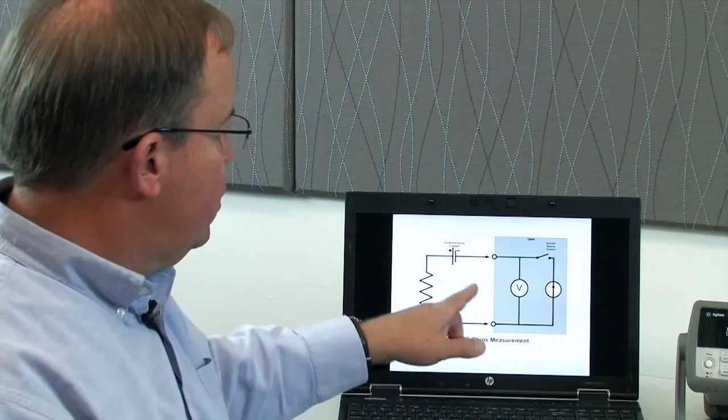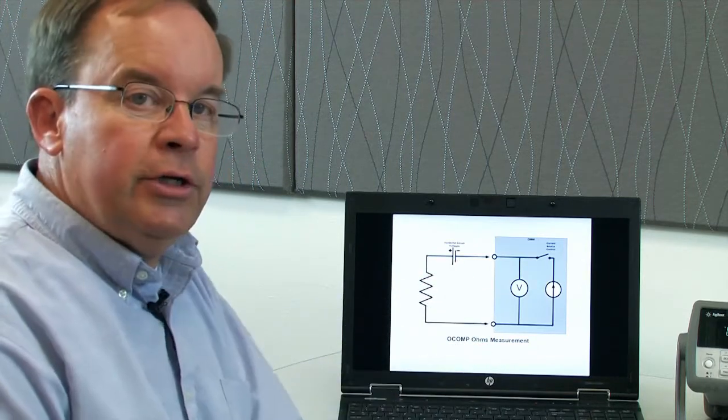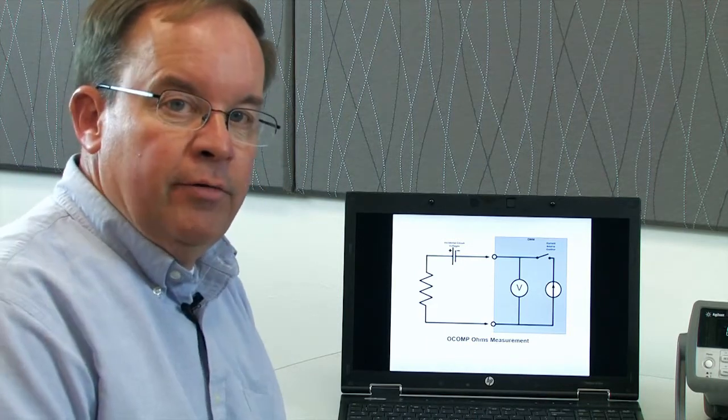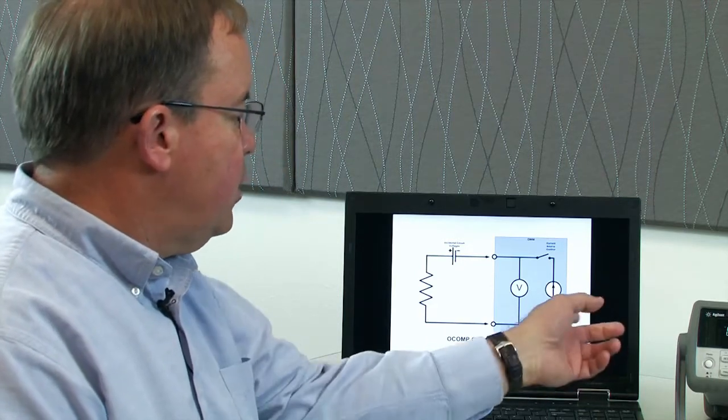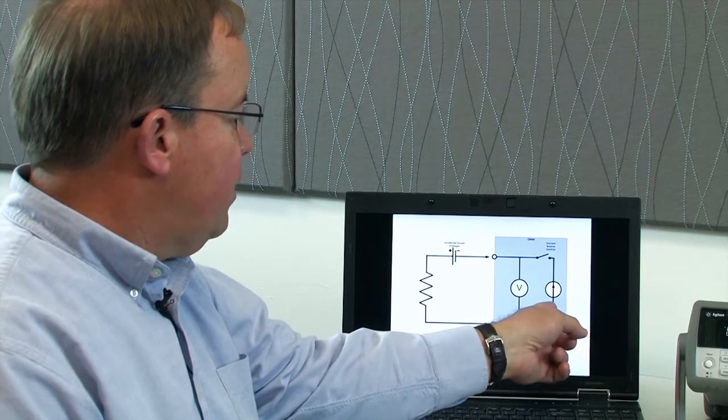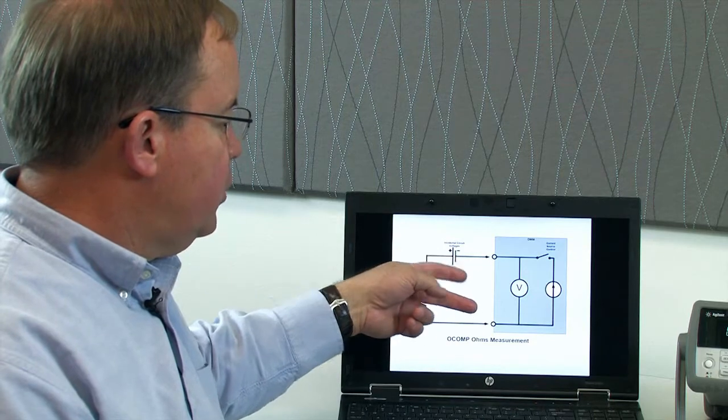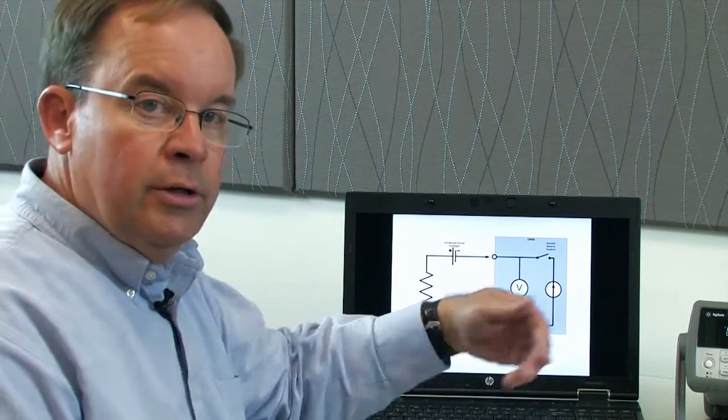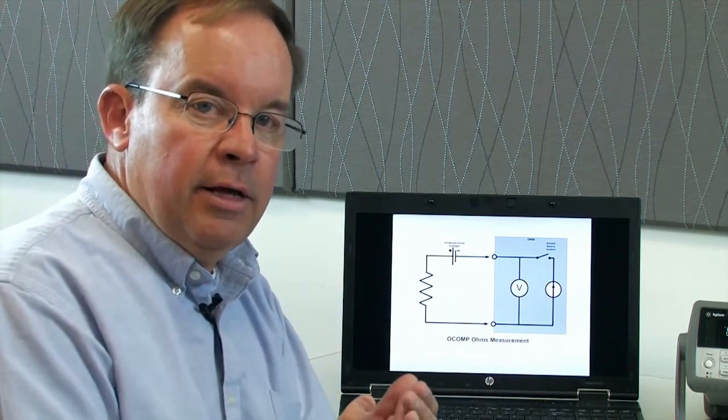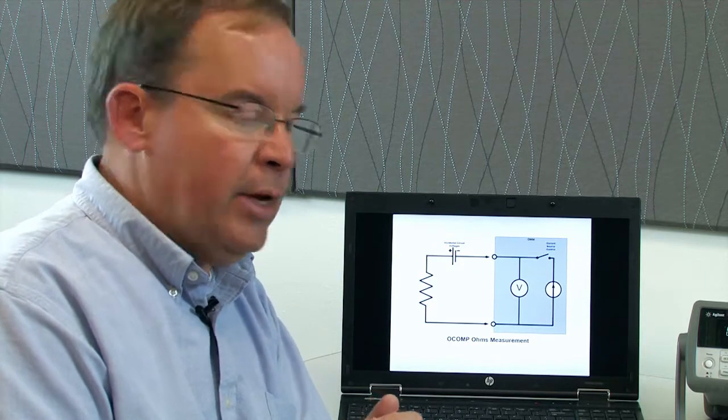Here's an example of a circuit in which we have some incidental voltages that have been added to the resistor itself. These may be very hard to get rid of in your actual measurement. So the digital multimeter then is able to switch off the current source, make a measurement of these incidental voltages, turn on the current source, and make a normal ohms resistance measurement, and then subtract the two and give you a very accurate measurement.